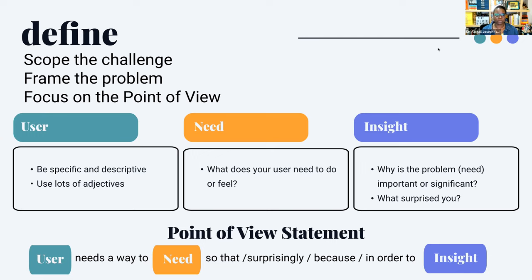That's our point of view statement. We could have another point of view statement focused on students — for example: a girl who sits in the corner of my classroom and doesn't seem engaged needs a way to be pulled into the computer science curriculum and feel comfortable with it, in order to make her feel like computer science is a discipline that she can excel at.